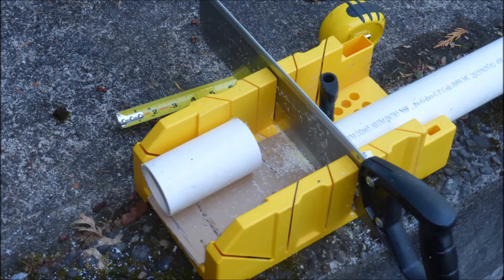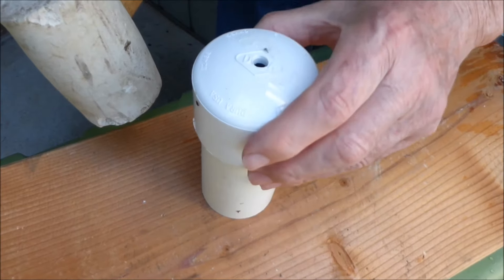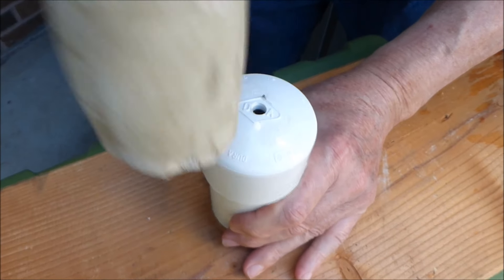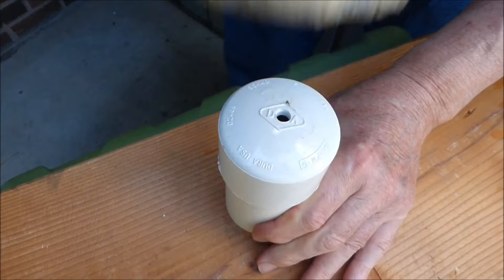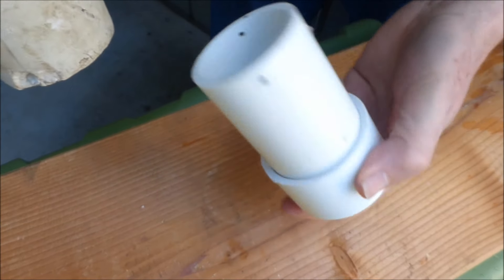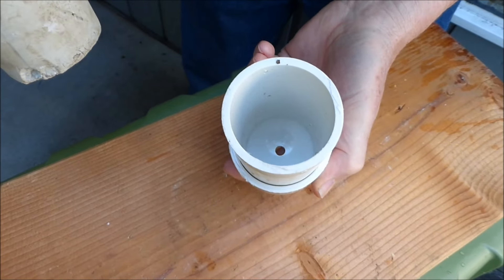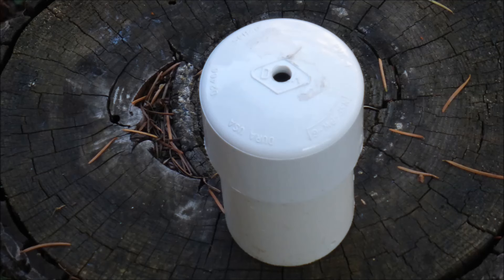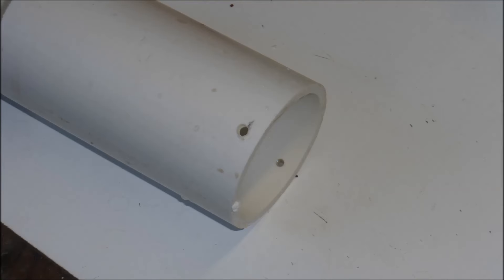Use a miter box to make flat cuts on a four and a half inch length of two inch diameter PVC pipe. The cap is slip fitted onto the PVC pipe. A 5/16 inch hole is drilled into a two inch PVC end cap. Two holes are drilled directly opposite of each other about one quarter inch from the bottom. One hole is 5/32 inch diameter and the other hole is 1/8 inch.